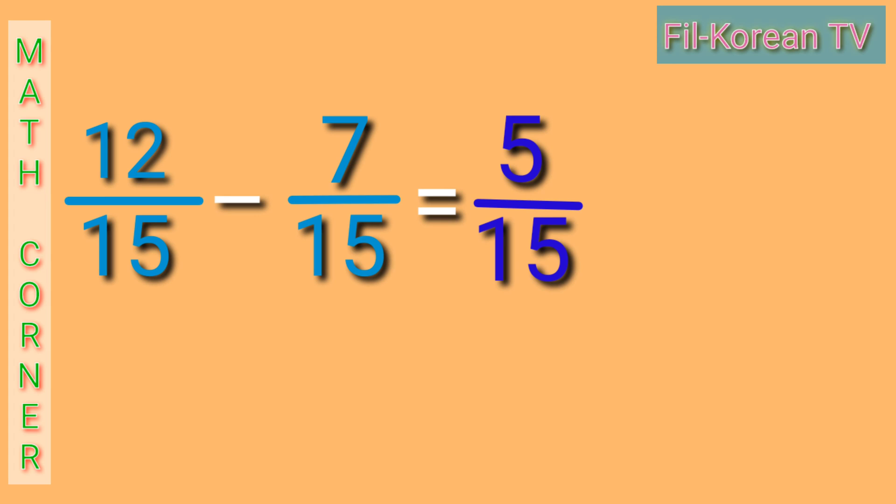Get the GCF of 5 and 15 and then divide them by their GCF. The GCF of 5 and 15 is 5. So, let's divide. 5 divided by 5 equals 1. 15 divided by 5 equals 3. The answer is one-third.